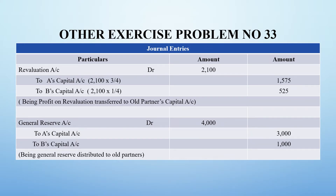Totalling both sides of the revaluation account, the balancing figure is 2,100 rupees. On the debit side we post A's Capital Account and B's Capital Account since there is a profit. So on the credit side, A's capital and B's capital will be split in their old profit sharing proportion. Total is 2,100 rupees.